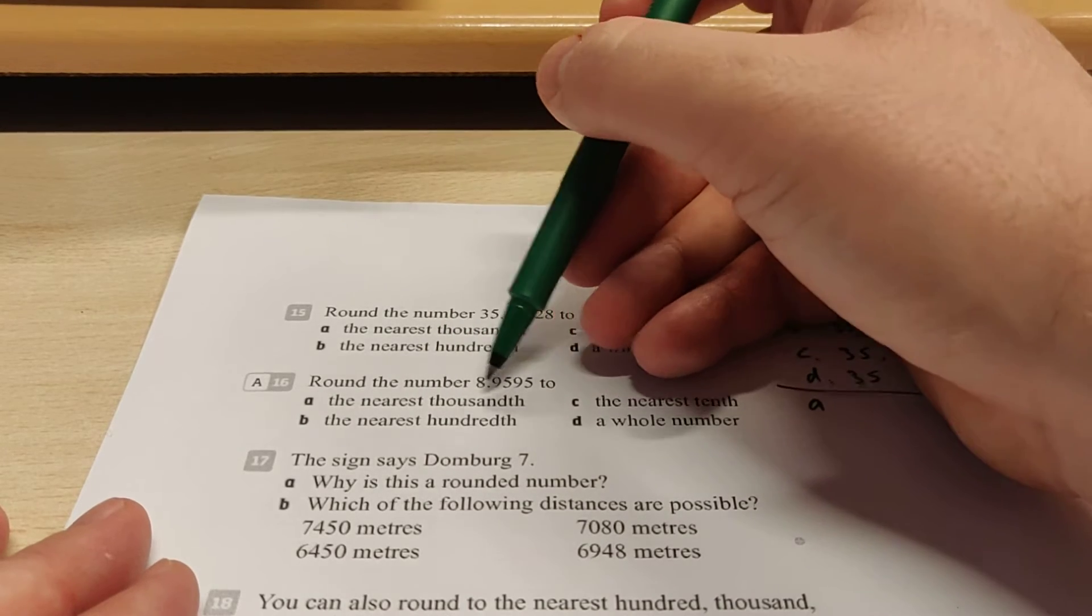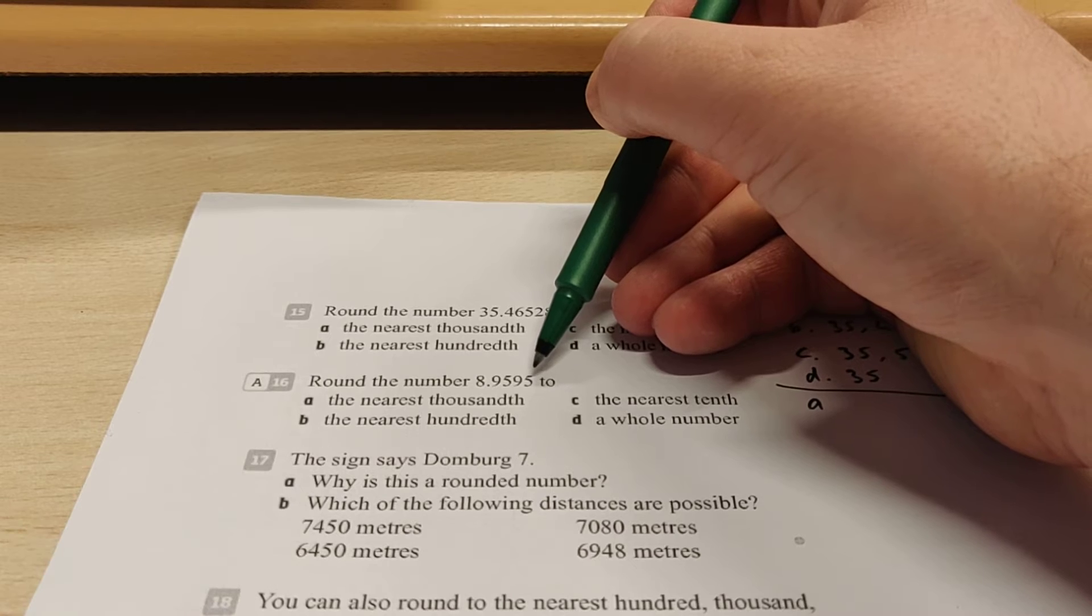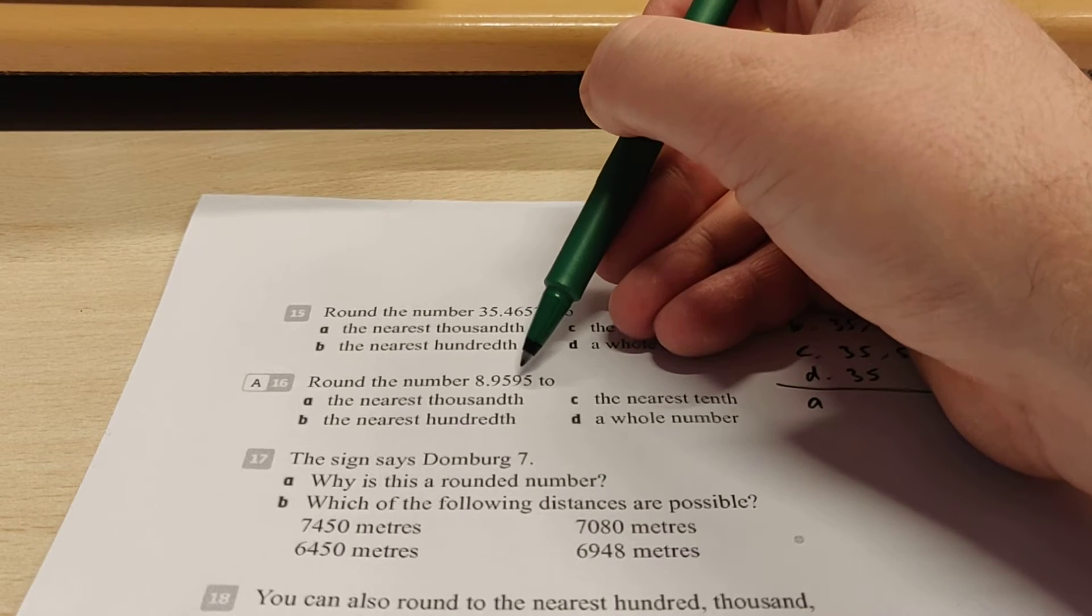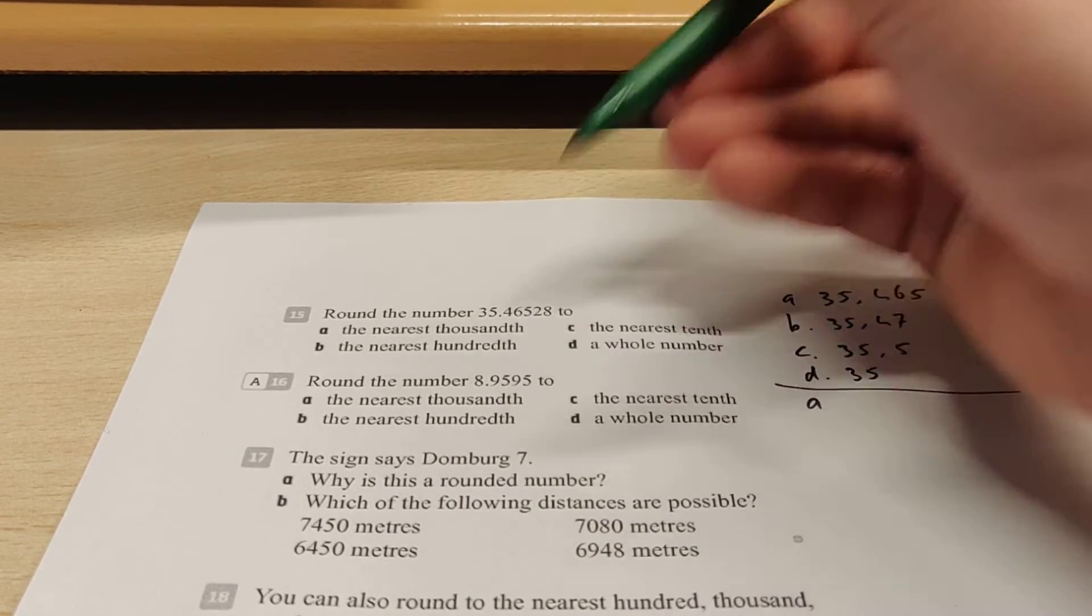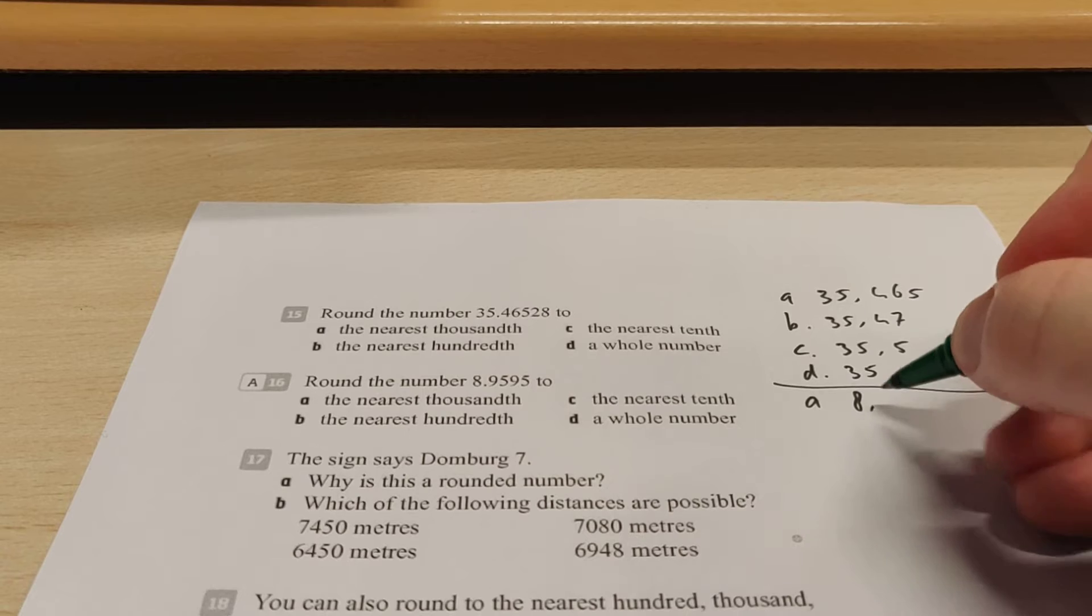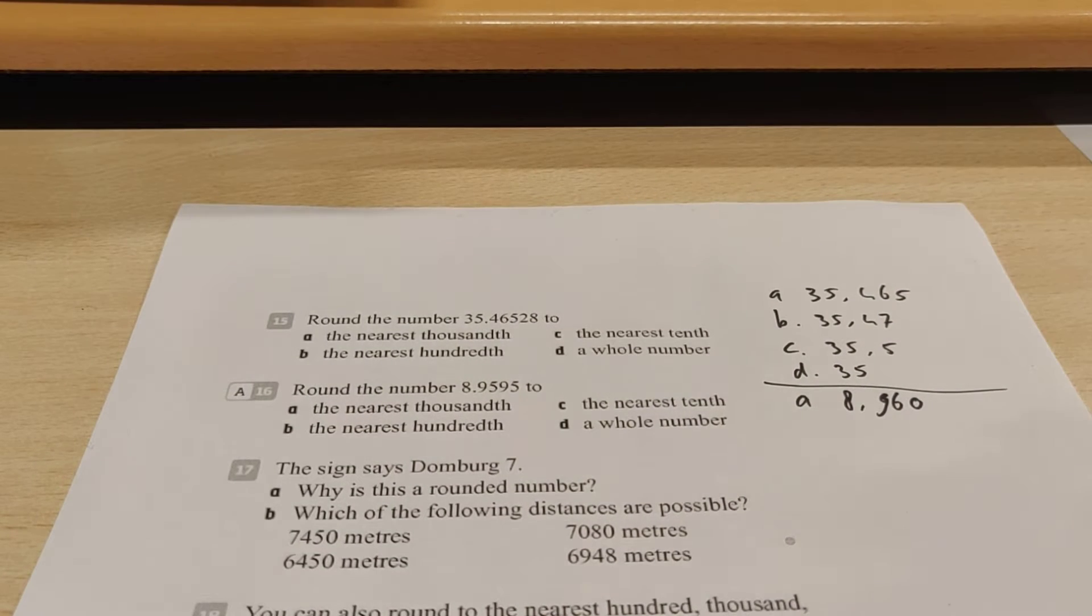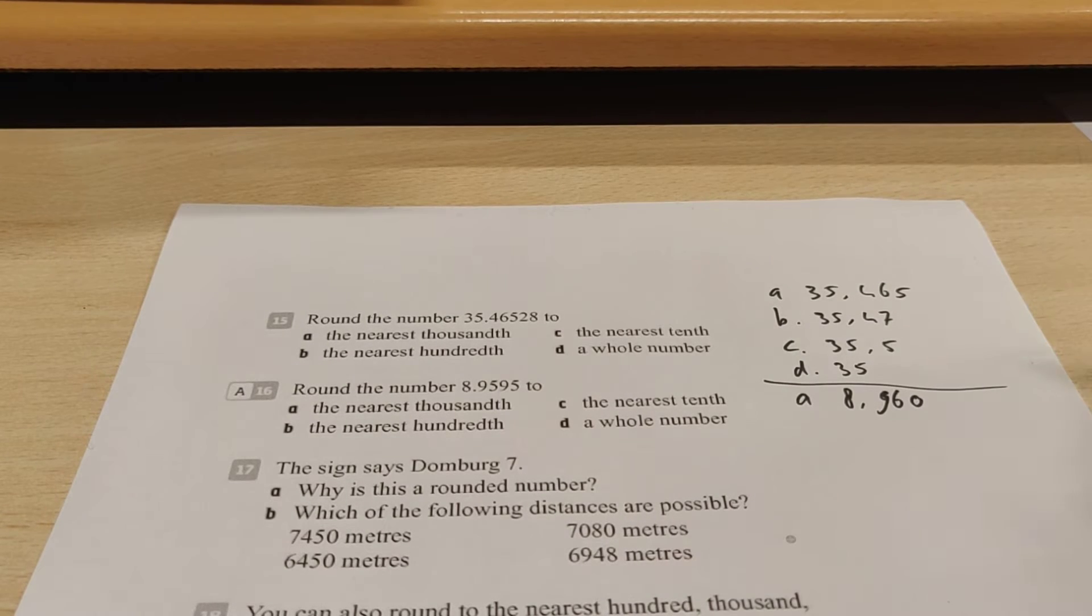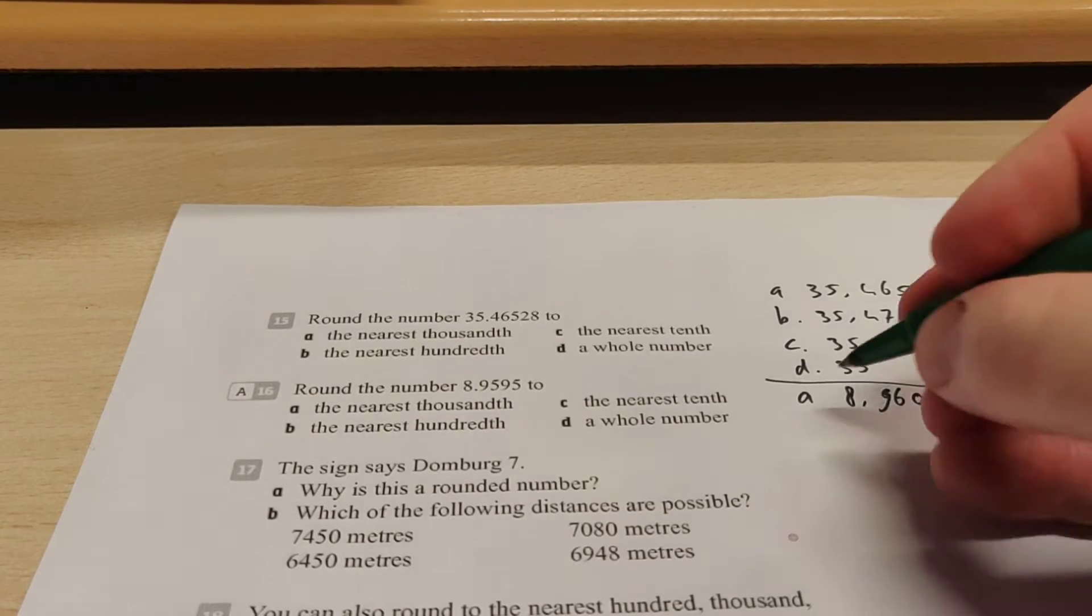If you want to round off to the nearest thousandth, that means that we have to round off to this number, this 9 here. The next number is a 5, that means you go up, so that means that this becomes 10. So then you have a bit of a problem because then it becomes a 0, and then this one becomes one higher. So you have 8.96. Now if you want, you can write down a 0 here. Because you have to round off to the thousandths. But you can also leave the 0 away because it's exactly the same number if you don't write down the 0.